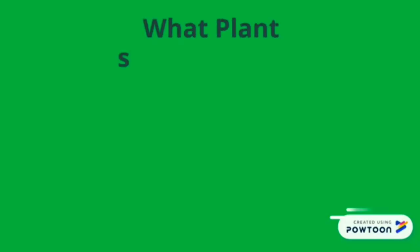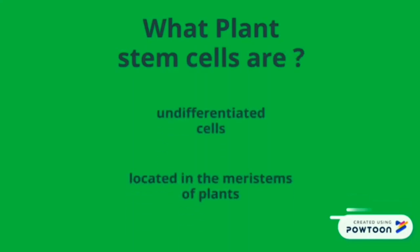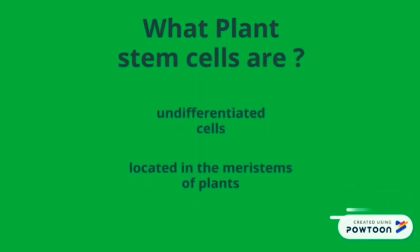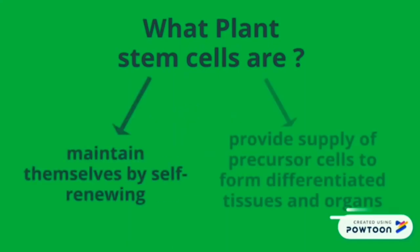Plant stem cells are undifferentiated cells located in the meristems of plants, which is a tissue specialized in growth. On one hand, they maintain themselves by self-renewing. On the other hand, they provide a supply of precursor cells to form differentiated tissues and organs in plants.